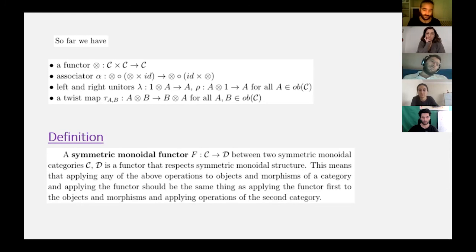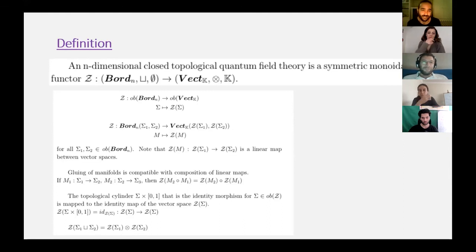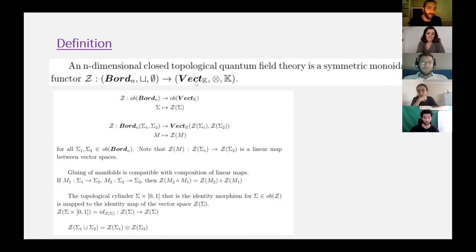I will give one example of symmetric monoidal functors. An n-dimensional closed topological quantum field theory is a symmetric monoidal functor Z from the category of bordism classes, with disjoint union and empty set, to the category of vector spaces, with tensor product and the underlying field K as the unit of the tensor product.